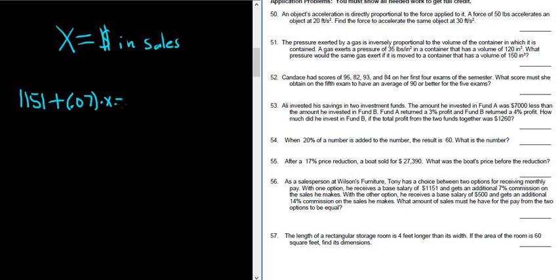This has to be equal to the other option, which is $500, that's the base salary, plus 14% commission on the sales, so 14% of the sales, so of X.